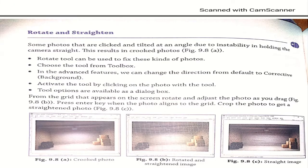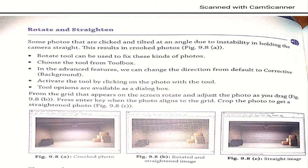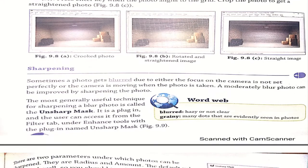Next is rotate and straighten. If your photo has been rotated and needs fixing, the rotate tool can be used. Choose the tool from the toolbox. If the advanced feature is available, you can default to the corrective background. Activate the tool by clicking on the photo, and tool options are available as a dialog box. Just click on the photograph and rotate it.